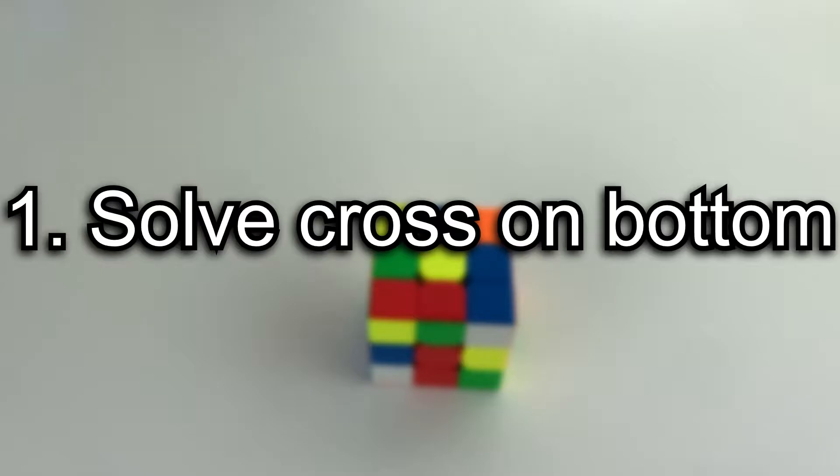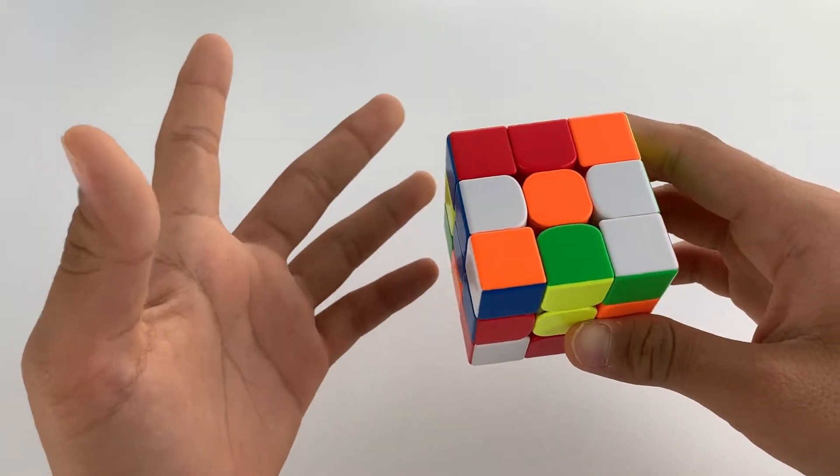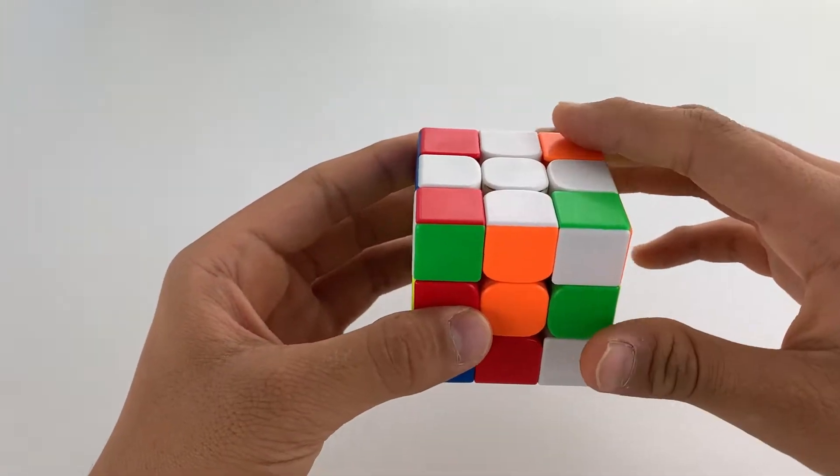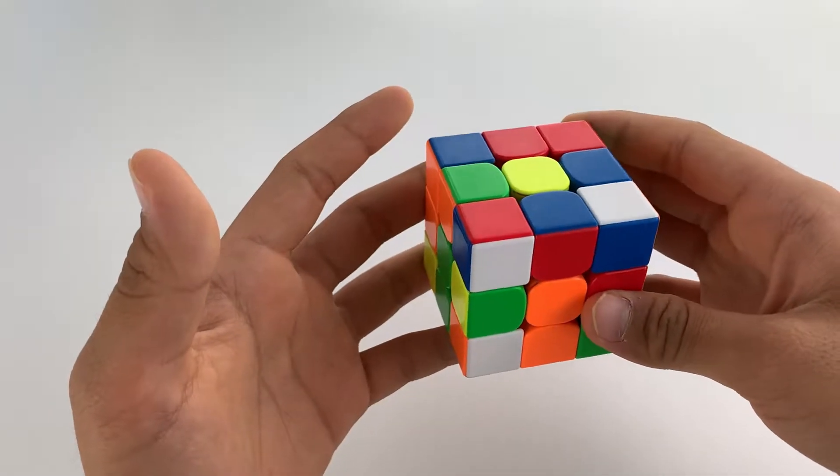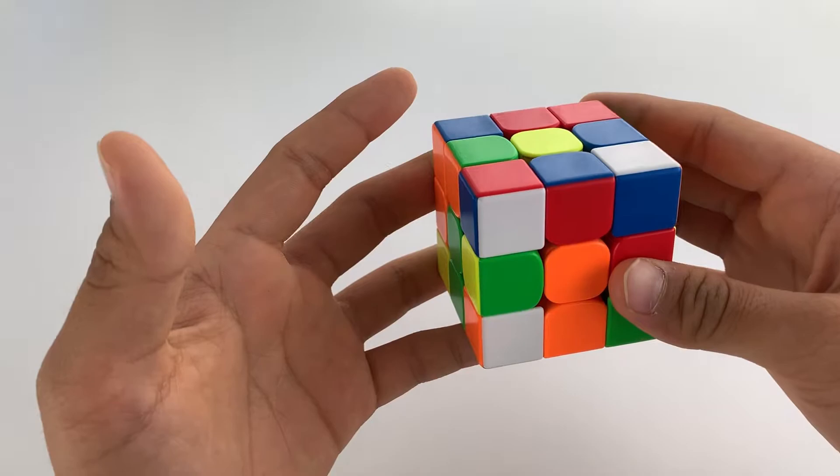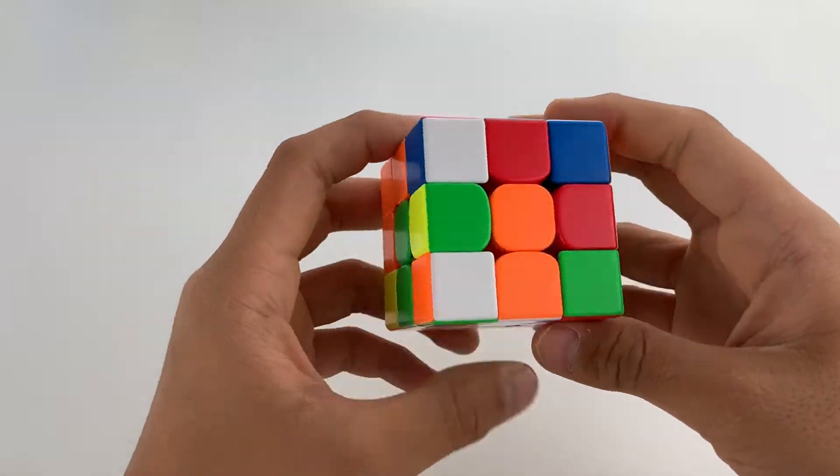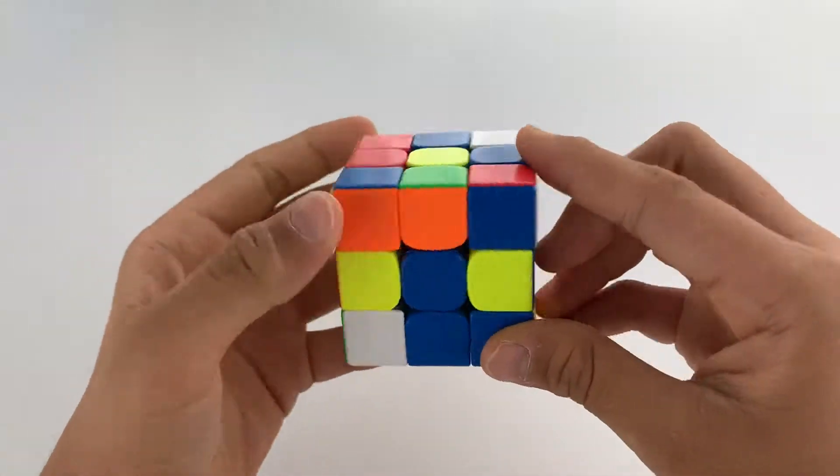Number one, do the cross on the bottom. The first step to solving a cube is solving the cross on top. Then you will have to rotate to start the next step. That's not good because it'll waste a little bit of time, so the best way to do it is to just solve the cross on the bottom and then go straight into first layer.